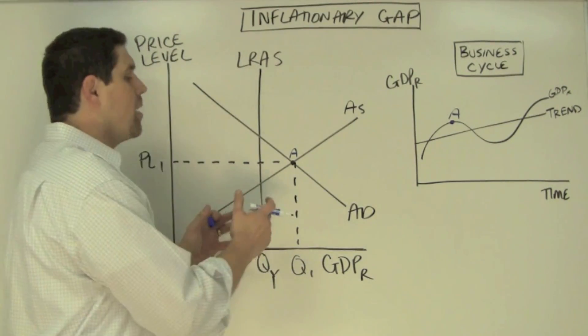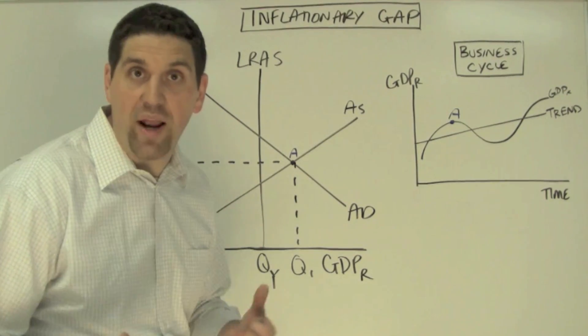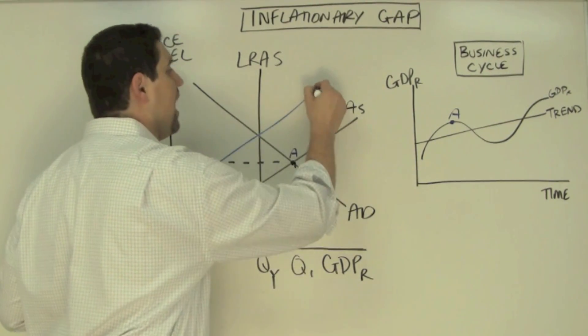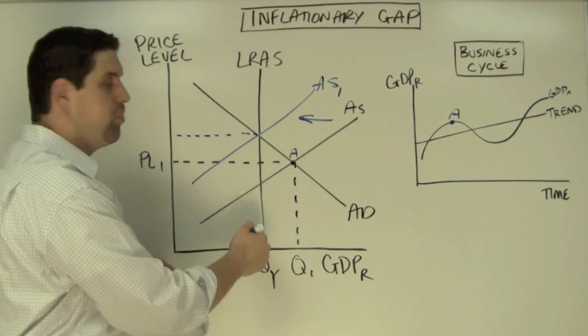So this question is saying, how is this economy going to adjust to new long run equilibrium? Well, when the price of these wages and the prices of these resources go up, that's going to cause the aggregate supply curve to shift to the left. This will cause the price level to go up and the quantity to go back to full employment.